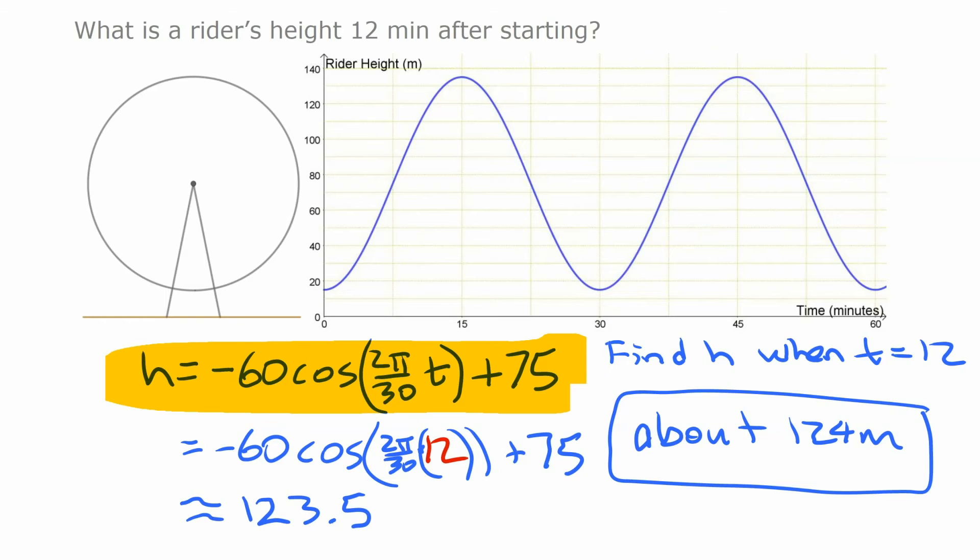Now one other thing to note here is when you're working this out on a calculator, first of all, you need to make sure your calculator is in radian mode. This whole model function is based on trig functions with radians. And then number two, when you're calculating this, if you're putting this whole thing in in one step, calculating it in one go, you got to be careful about how you're using brackets and everything there.